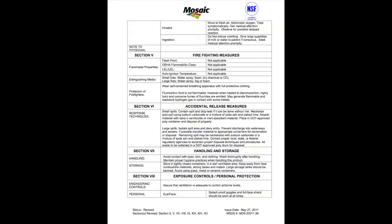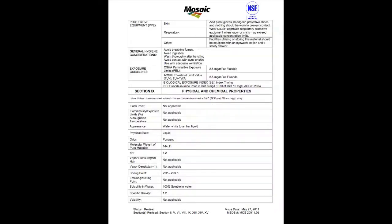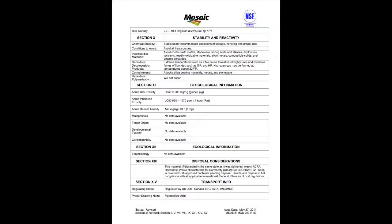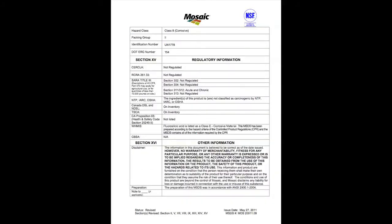Those decay products are radon and polonium. Polonium can be carcinogenic to people if exposed to more than 6.8 trillionths of a gram. Hydrofluorosilicic acid also includes hazardous air pollutants such as hydrogen fluoride, and hazardous metals such as arsenic, lead, mercury, and nickel.